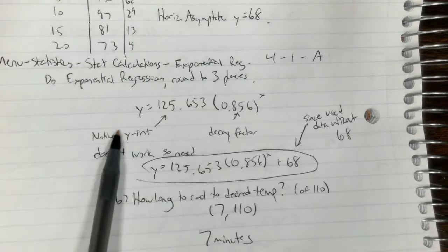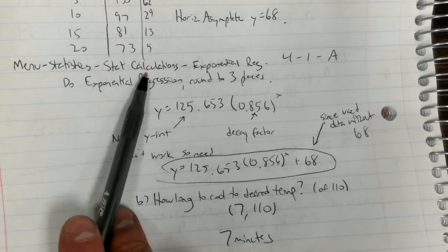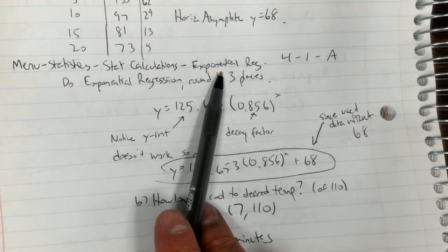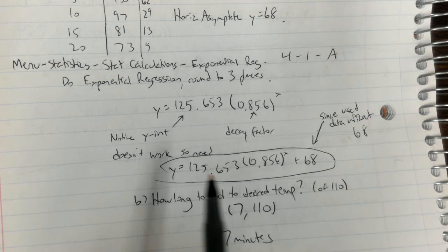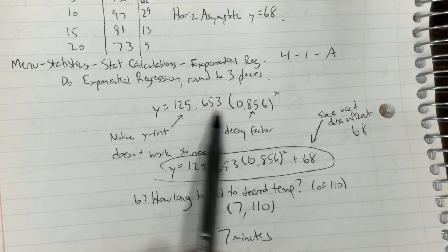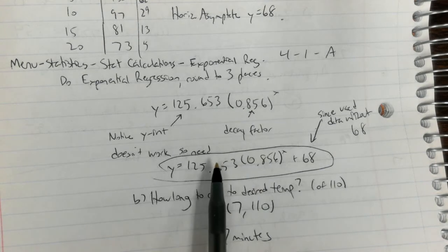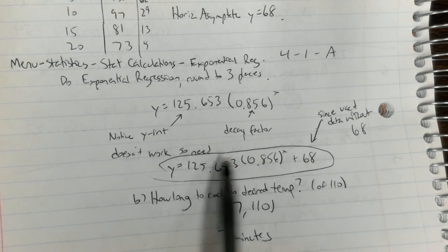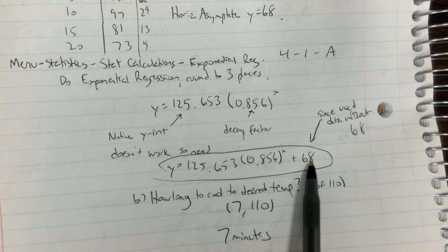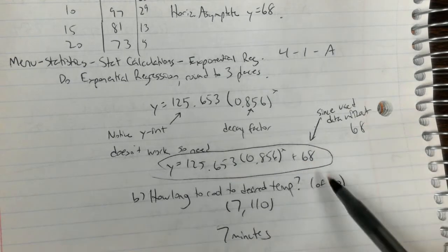Now you can see that it was menu statistics, stat calculations, exponential regression for one A. This number was not the same as our y-intercept. This one was under one, which is what we expected, and in order to get your answer right you have to put your plus this number, in my case it was 68 degrees.